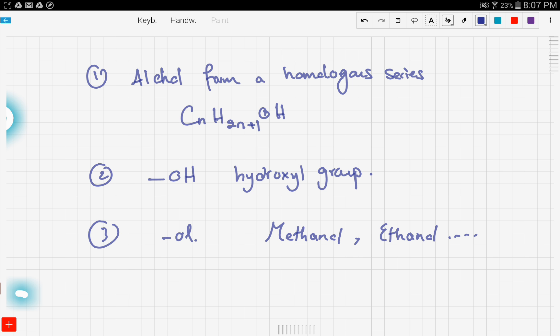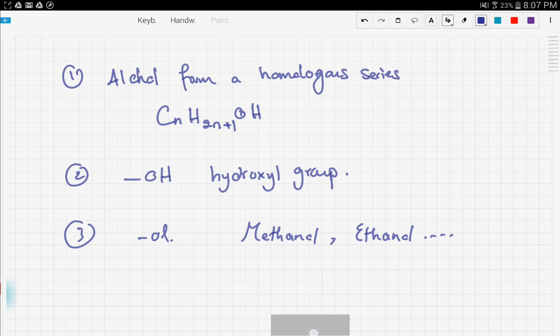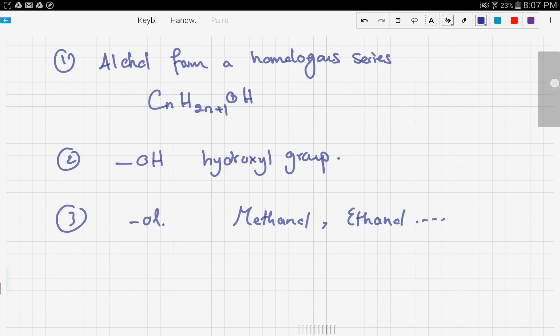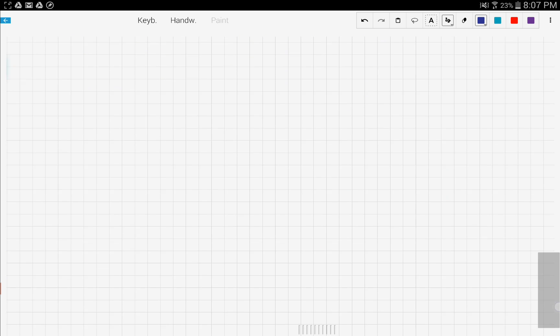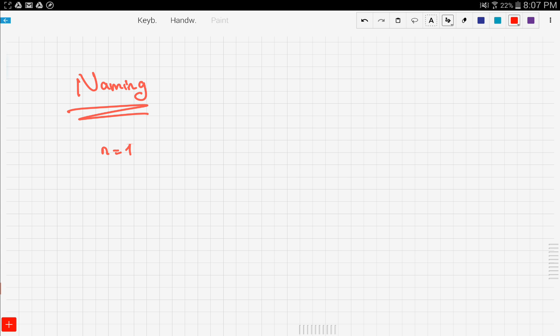We're gonna get into the naming of alcohols right now. Like all families, they have members and those members depend on the number of carbons present. Using the formula, the smallest member in this family is n equals 1.